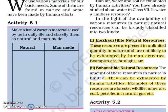The second group of resources is Exhaustible natural resources. The amount of these resources in nature is limited, and they can be exhausted by human activities. Examples of these resources are forests, wildlife, minerals, coal, petroleum, natural gas, etc. If we are not wise enough in using these natural resources, they can come to an end one day. So these are known as Exhaustible natural resources.